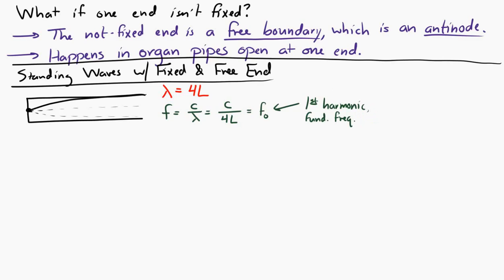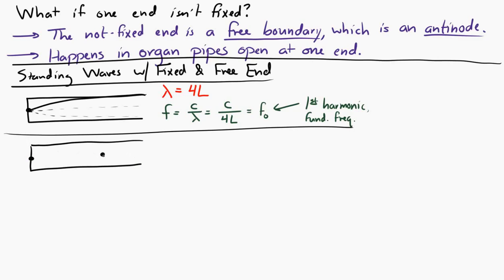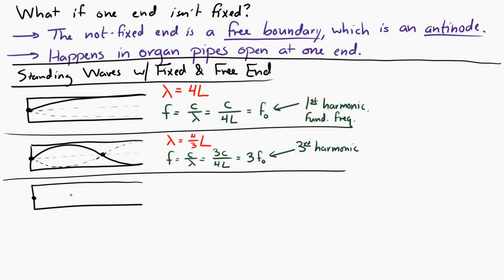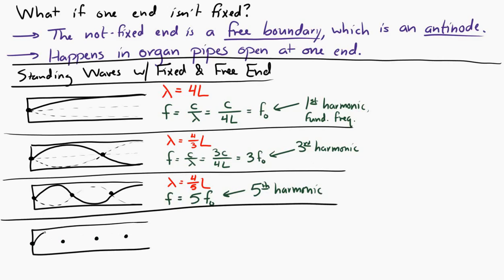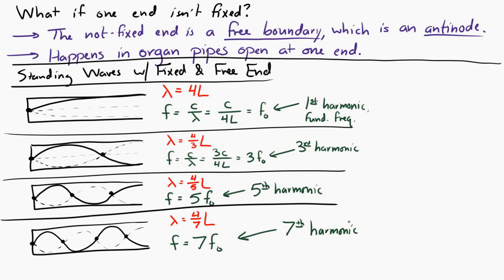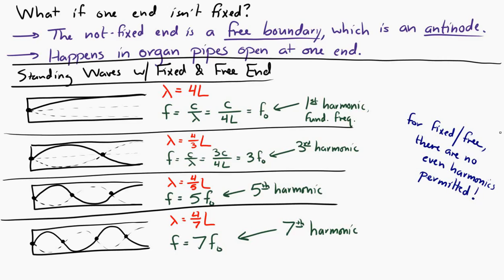Going to the next highest frequency — we must keep one fixed end and one free end. The next wave has wavelength equal to 4/3 L, giving a frequency equal to 3 times the fundamental frequency — the third harmonic. The next has wavelength 4/5 L, giving 5 times the fundamental — the fifth harmonic. The next has wavelength 4/7 L, giving 7 times the fundamental — the seventh harmonic. Notice: with one fixed end and one free end, there are no even harmonics permitted.